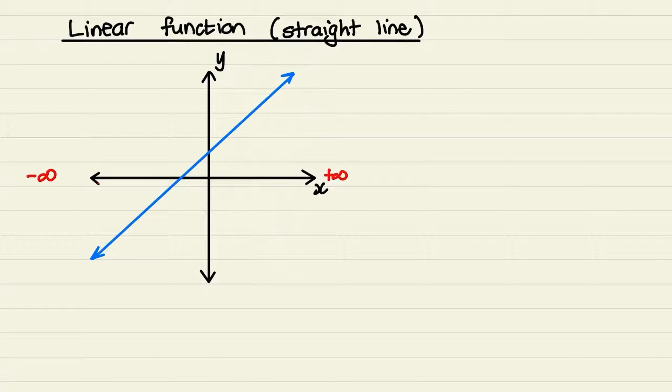That means that the domain exists for all possible values of x, for every real number of x. Or we can say that the domain is from negative infinity to positive infinity.